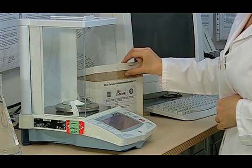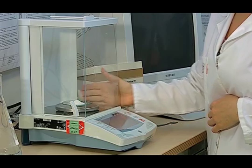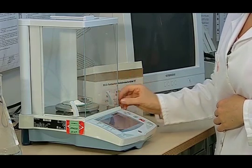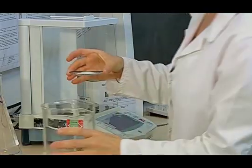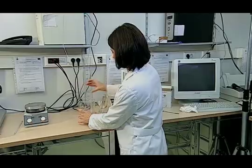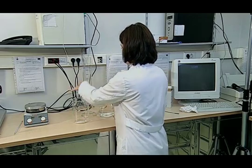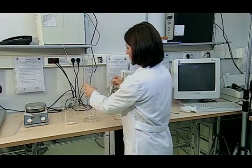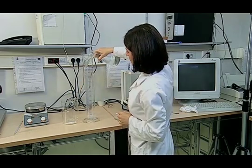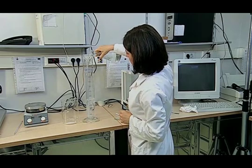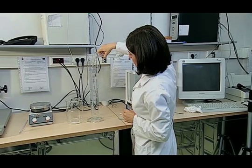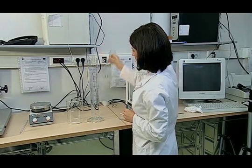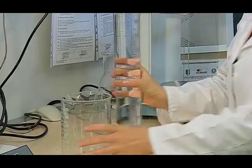After reading four grams on the screen, we pour the detergent into a clean beaker. Then one litre of pure water is measured with the graduated cylinder and poured over the detergent.